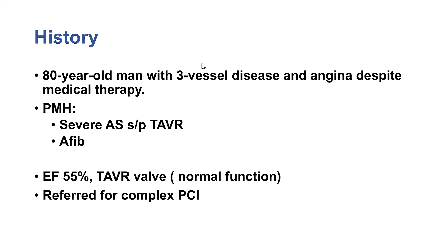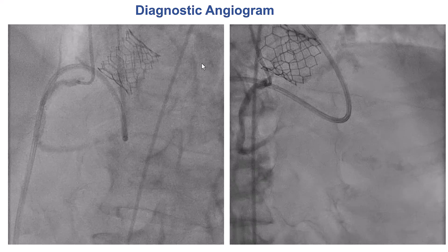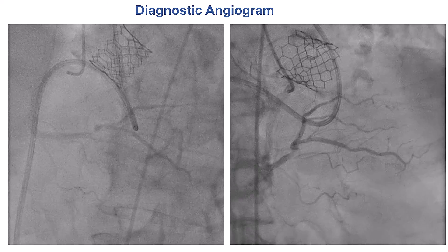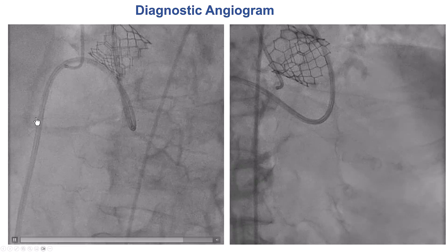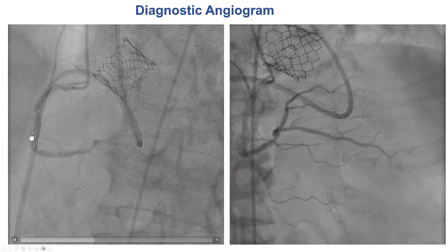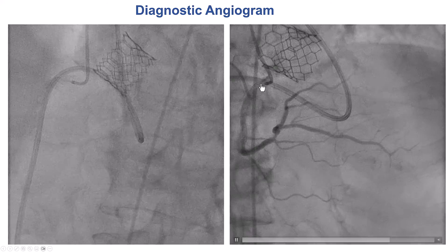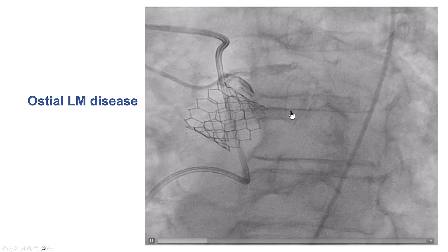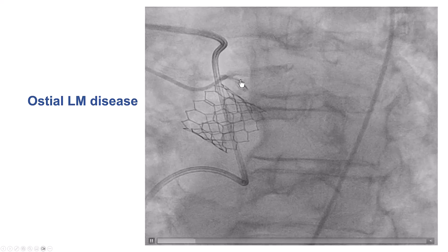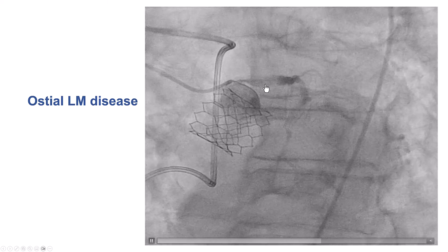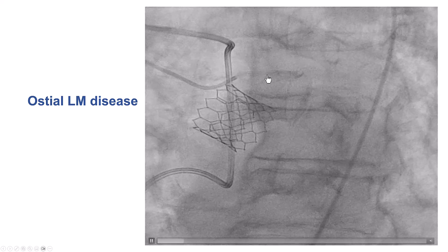The patient was an elderly gentleman who presented with angina. He did have previous TAVR and normal left ventricular systolic function. The coronary angiogram shows significant calcification and severe lesions in the mid and distal right coronary artery, as well as significant disease on the left side, including significant left main disease with dampening of pressure at the ostium.